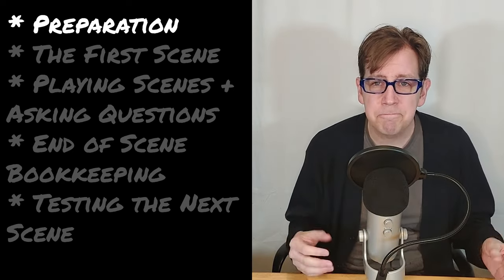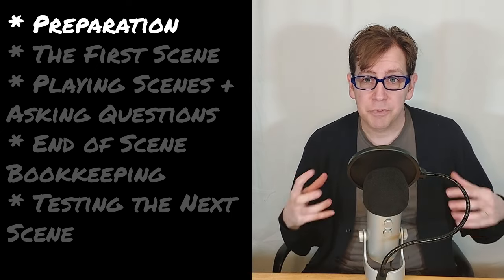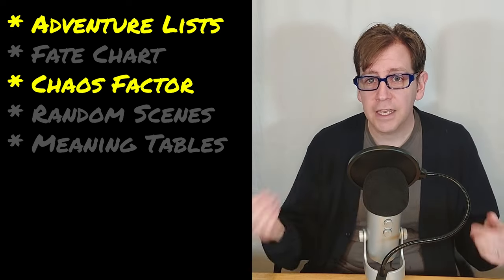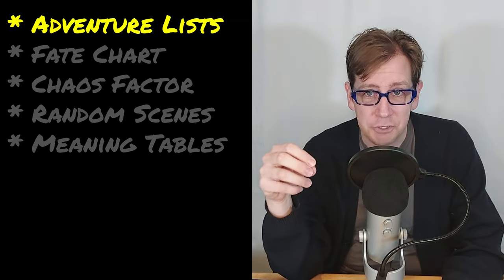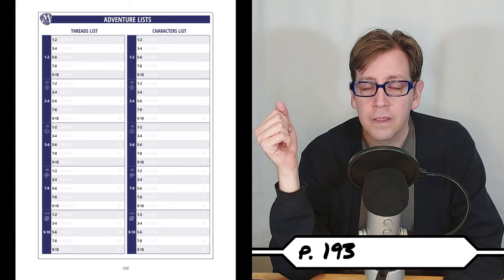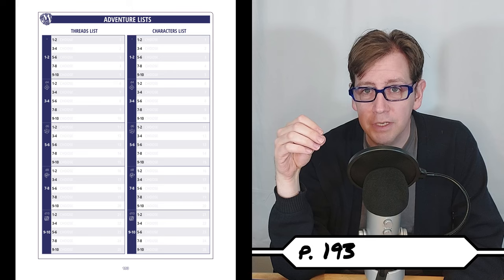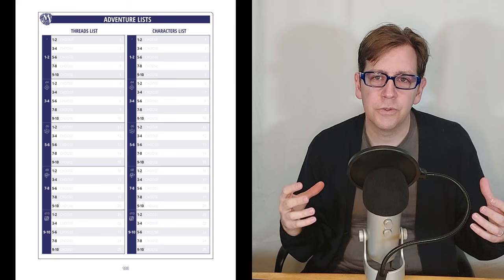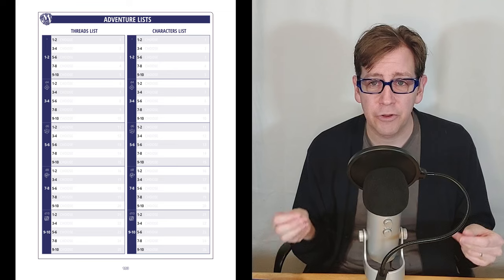Now we need to prepare our adventure. We're going to need to prepare our adventure lists, our chaos factor, and decide how we're going to record our game. First off, the adventure lists — there are two: the thread list and the character list. The printable version is on page 193 of the book. I recommend printing that out if you are going to play analog.